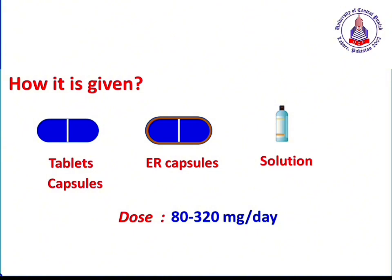In summary, propranolol is a non-selective beta blocker which blocks both beta-1 and beta-2 receptors. Because of its non-selectivity, this drug can be used in various cardiovascular conditions as well as prophylactically in migraine, thyrotoxicosis, pathological tremor, and pheochromocytoma. This drug may produce bronchospasm so it should be carefully given, and it can also increase hypoglycemia particularly in diabetic patients.